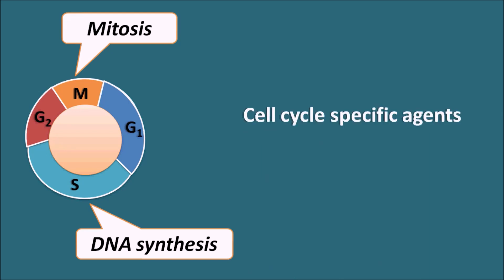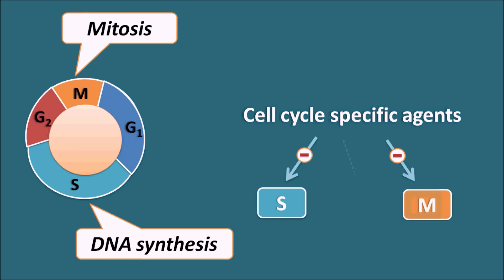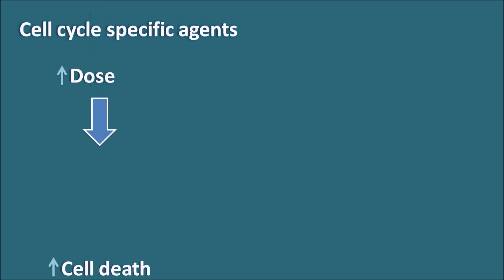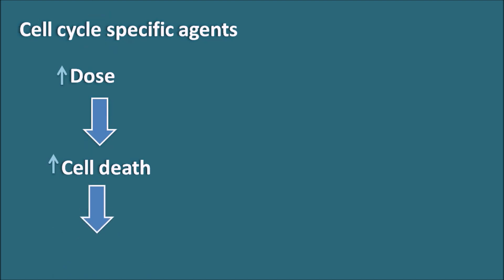Cell cycle specific agents can inhibit the S phase or the M phase, which are the two important phases within cell division. Some anti-cancer agents can also block G1 and G2 phases. With cell cycle specific agents, as we increase the dose, cell death increases linearly, but after a certain high dose we observe a plateau phase.